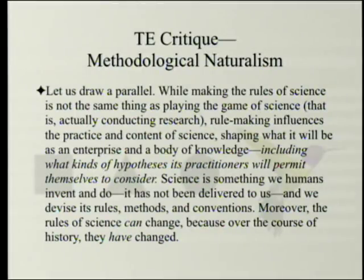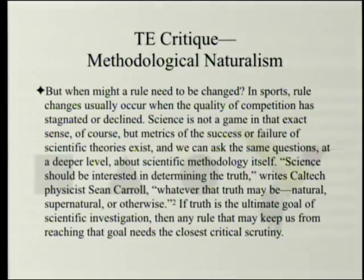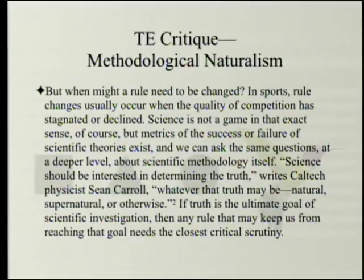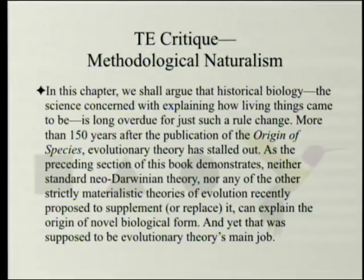Let us draw a parallel. While making the rules of science is not the same as playing the game of science — that is, actually conducting research — rulemaking influences the practice and content of science, shaping what hypotheses its practitioners will permit themselves to consider. Science is something we humans invent and do; we devise its rules, methods, and conventions. The rules of science can change because, over the course of history, they have changed. Caltech physicist John Carroll — who, by the way, is an atheist — writes that science should be interested in determining the truth, whatever that truth may be: natural, supernatural, or otherwise. Historical biology is long overdue for just such a rule change.